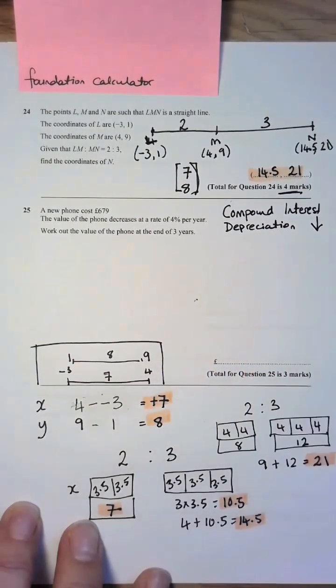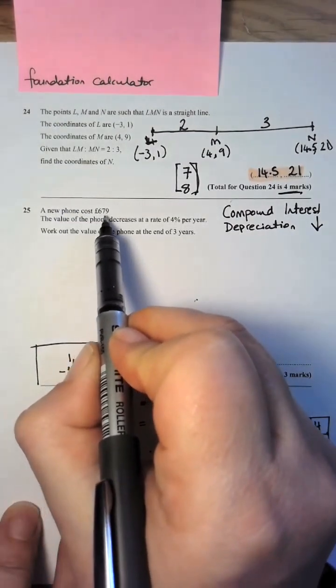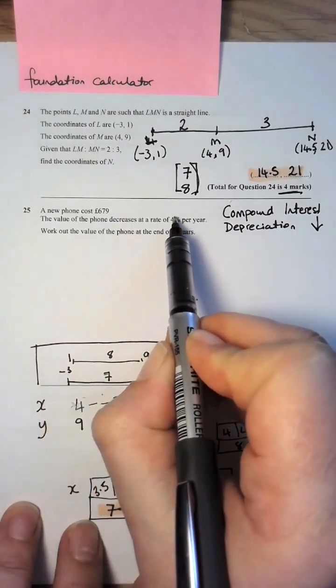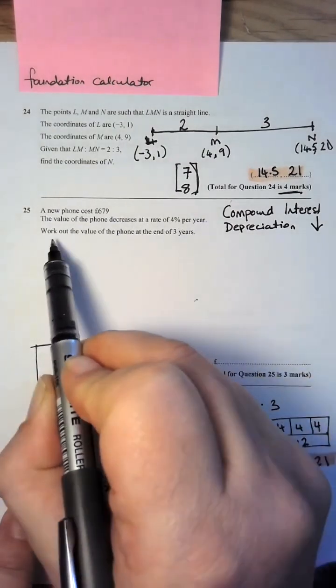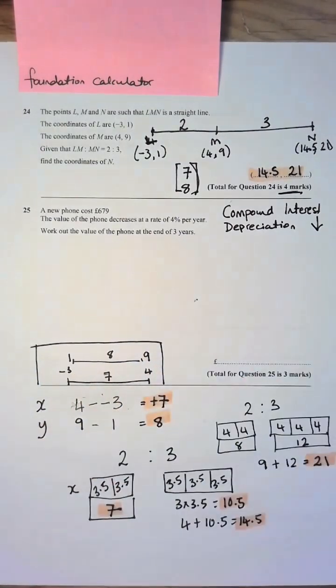We're actually going down, right, let's read it properly. A new phone costs 679 pounds, the value of the phone decreases at a rate of 4% per year, work out the value of the phone at the end of three years. Now there is a formula for this on the formula sheet.